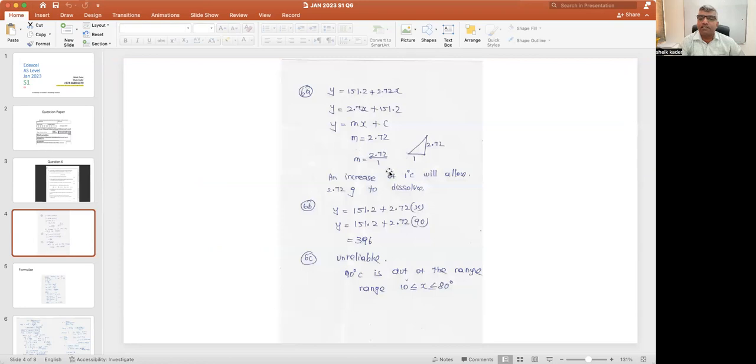m is equal to 2.72. m is rise over run. Rise is 2.72, run is 1. An increase of 1 degree Centigrade will allow 2.72 grams to dissolve.